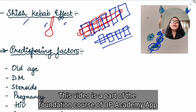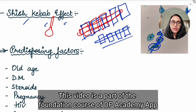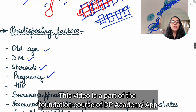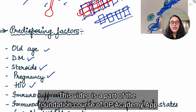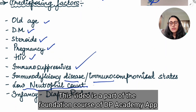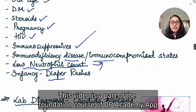What are the predisposing factors for Candida? Candida is present as normal flora, but in some cases when immunity is low or in case of HIV individuals, the normal flora causes infection. All situations in which patient's immunity is low include: old age, diabetes mellitus, steroids causing decreased immunity, pregnancy as a physiological state where immunity is decreased, HIV as an immunosuppressive state, immunosuppressive drugs, immunodeficiency diseases, low neutrophil count, and in case of infancy it causes diaper rashes.